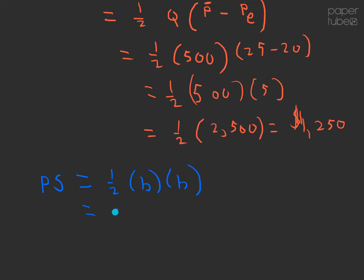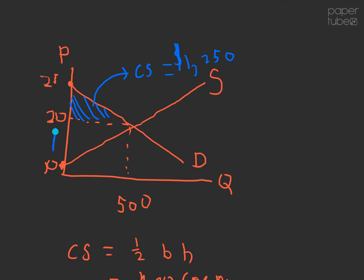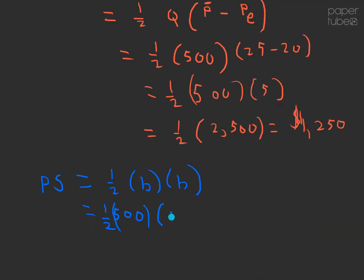Just like with the consumer surplus, the base is going to be the equilibrium quantity of 500. And the height is going to be the difference between the equilibrium price and the price where the supply curve hits the price axis. Now if you're thinking about that, that's probably the shutdown price. So the difference between those two prices is 10. So one half of 500 times 10 should give us 2,500. Feel free to double check my math.